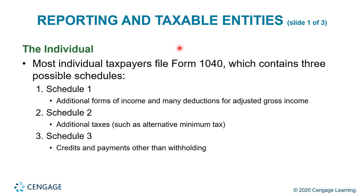Most individual tax filers file Form 1040, which contains three possible schedules: Schedule 1, 2, and 3. Schedule 1 covers additional forms of income and many deductions for adjusted gross income. Schedule 2 covers additional taxes such as alternative minimum tax. And Schedule 3 covers credits and payments other than withholding.